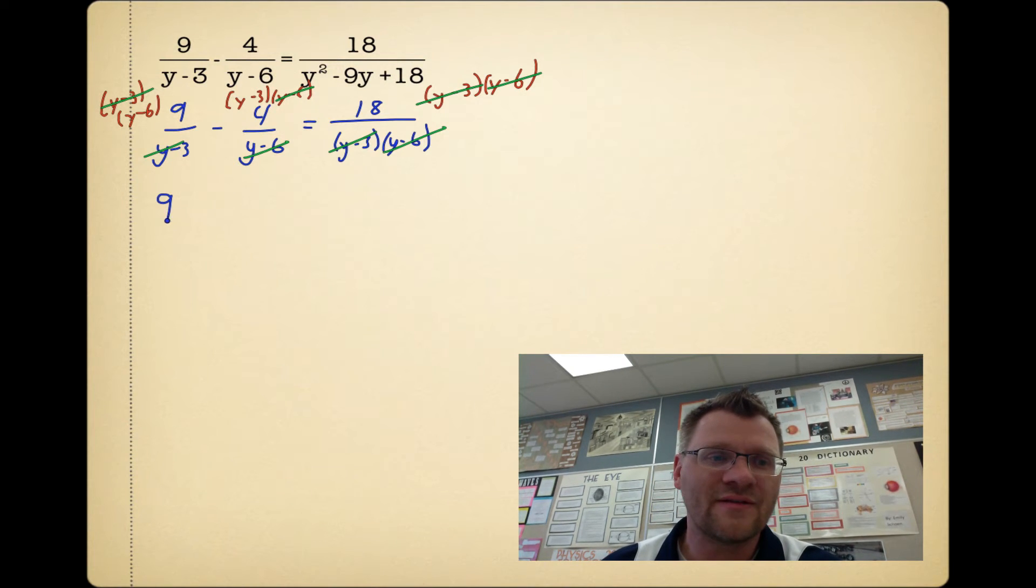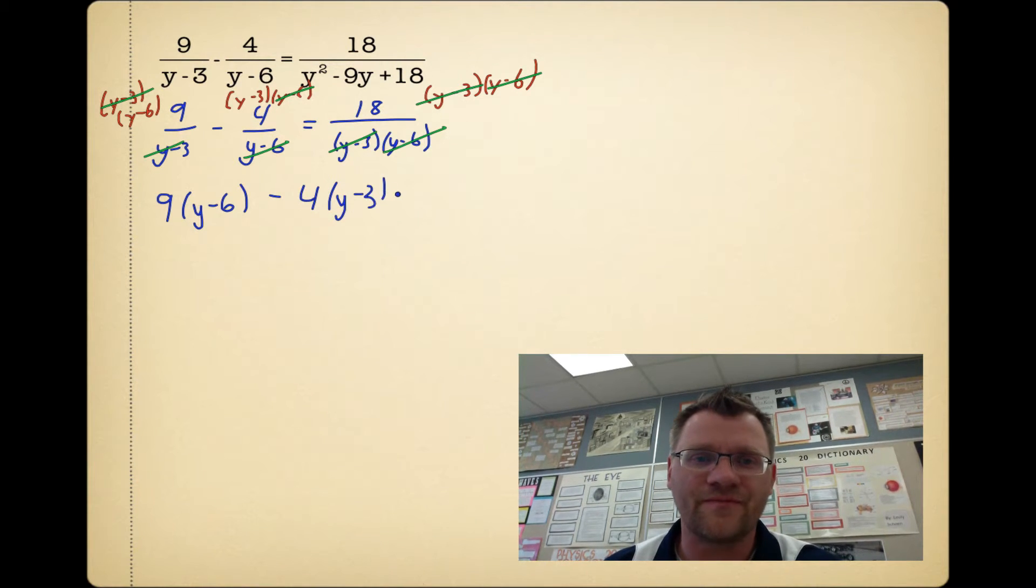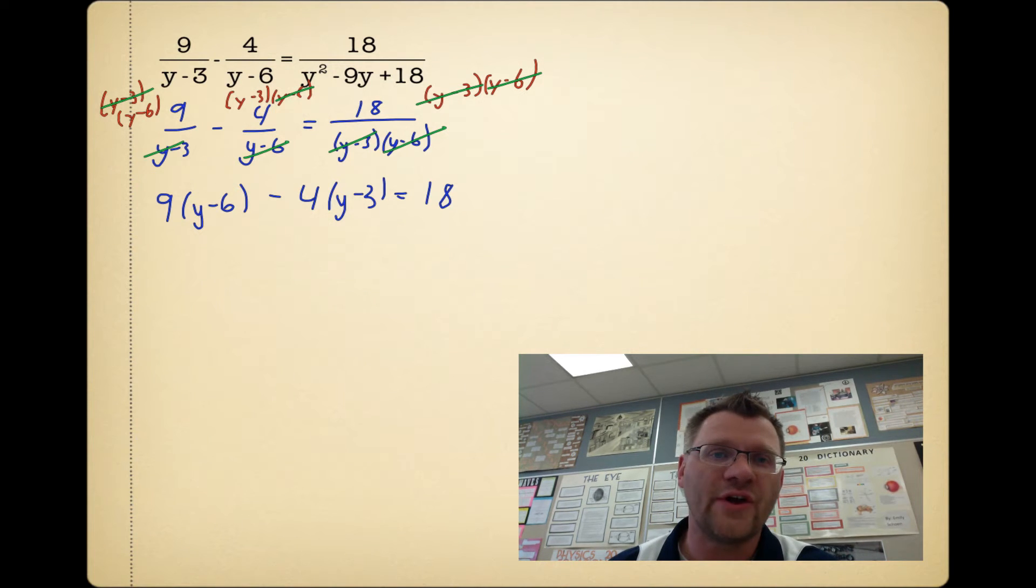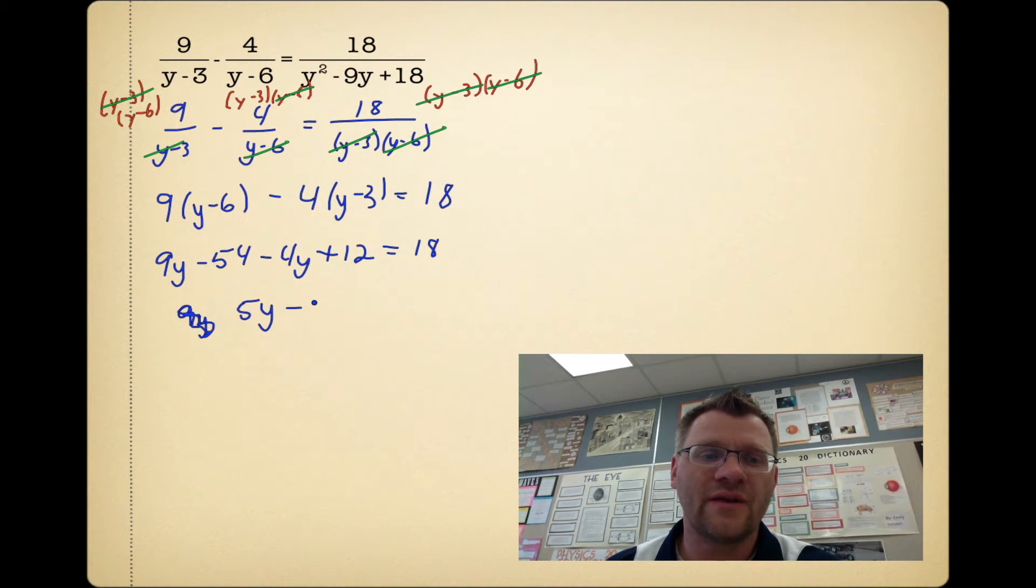And what I'm left with is 9(y-6) minus 4(y-3) equals 18. I've gotten rid of all the denominators. I just have to expand this equation and solve. So I get 9y-54-4y+12 equals 18, which is 5y-42. If I add 42 to both sides, I get 5y equaling 60, and that means y equals 12.